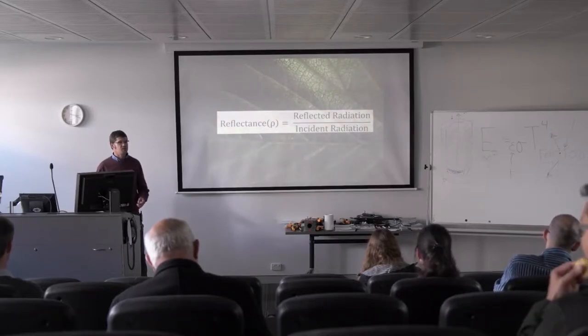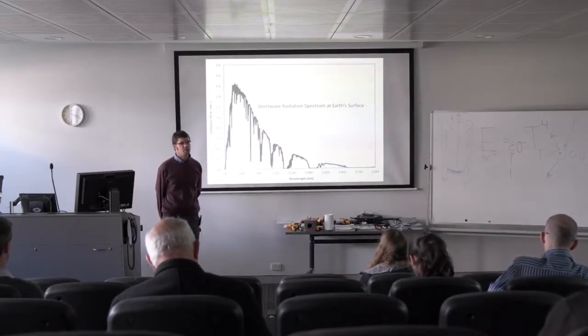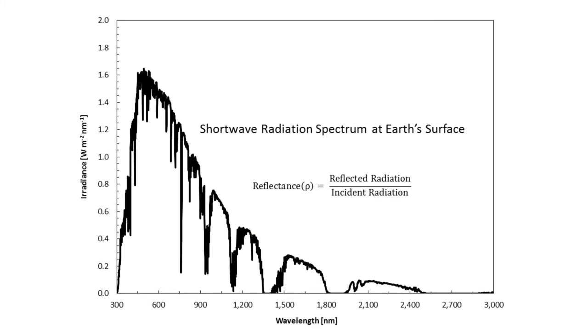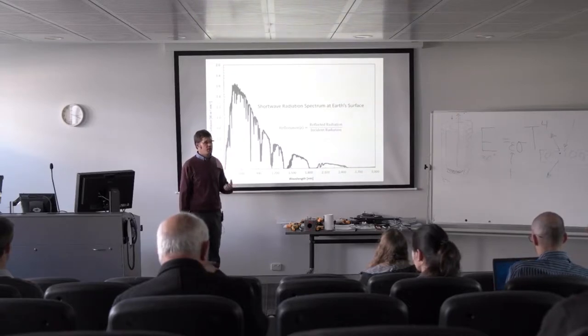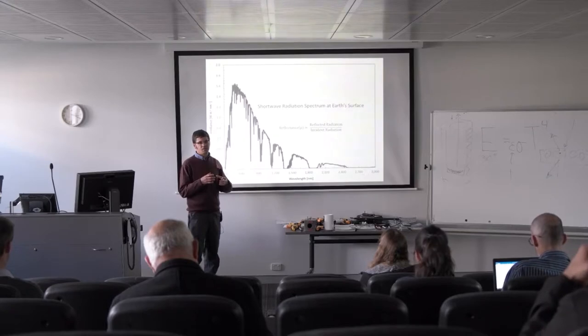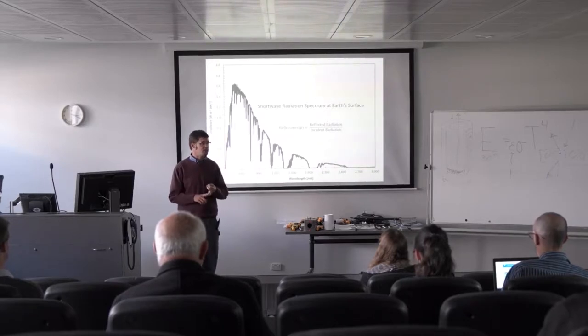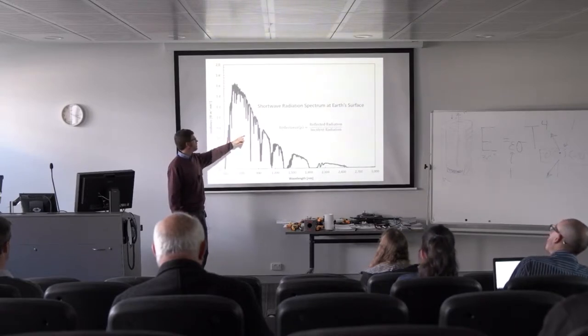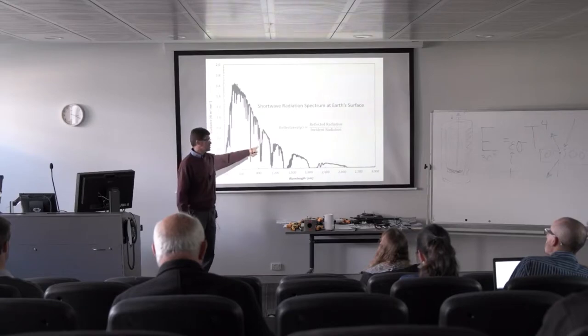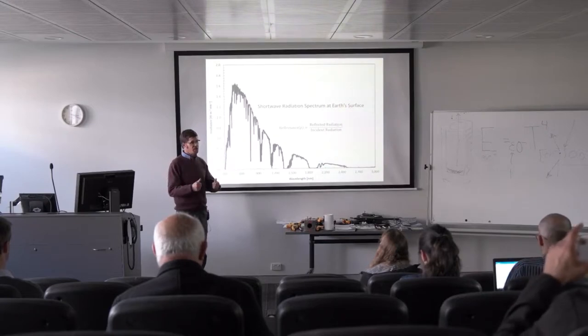We've already seen this plot more than one time today, so I won't spend too much time on it. It shows the shortwave radiation spectrum at earth's surface. In most applications, though we can do this in the laboratory with artificial lights, when we're talking about scales of plant canopies and flux towers, typically the light source is the sun, and so incident radiation is these data you see right here.